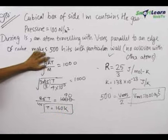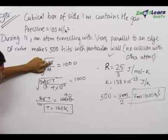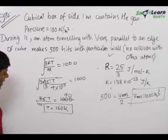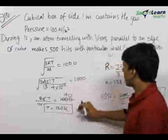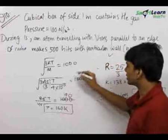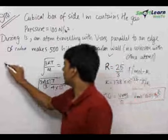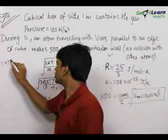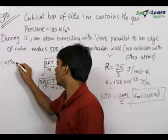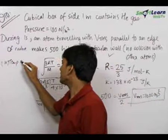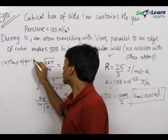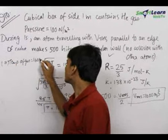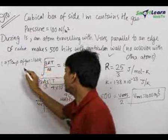In all these formulas, T is always in Kelvin. So the answer for the first part — the temperature of the gas — comes out to be equal to 160 Kelvin.